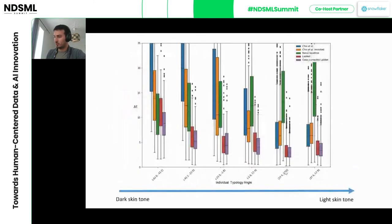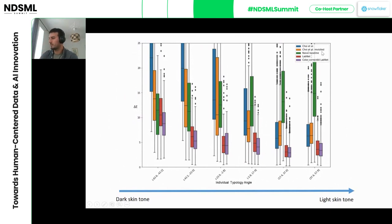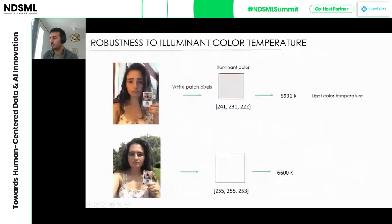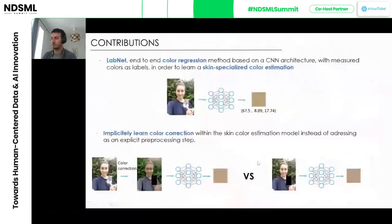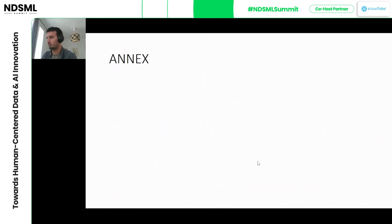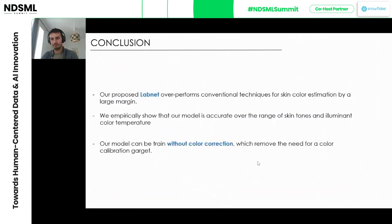Looking at performance across skin colors: comparing all approaches, our model without the color checker — the red curve — outperforms most methods across the board. However, you can also see it works better for lighter skin tones. This is due to the initial imbalanced skin tone distribution I showed earlier — a classic deep learning problem. The solution is to collect more data to get a more balanced distribution, which would make the system more accurate for darker skin tones. This is a known, solvable problem.